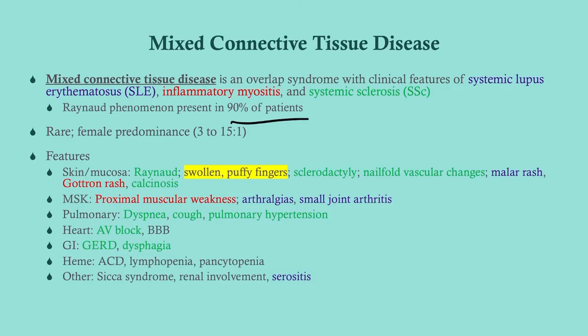I've color coded the features so you can see which correspond to which condition - some are in black for non-specific findings. You can get Raynaud's phenomenon, and swollen puffy fingers which are actually more specific for MCTD. They are swollen but not thick like you'd see in systemic sclerosis. You can also get sclerodactyly, nail fold vascular changes, malar rash like lupus, Gottron's rash like myositis, and calcinosis.